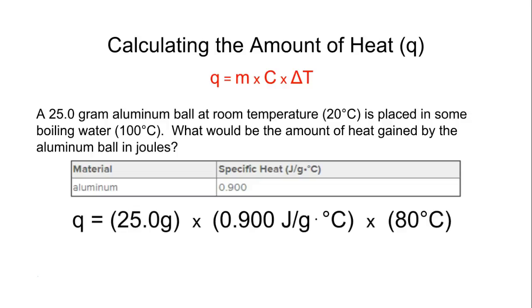Well, if we write this out, we end up having 25.0 grams. There's our specific heat of 0.900. And then of course the temperature change went from 20 degrees Celsius to 100 degrees Celsius. We're assuming that aluminum ball was going to be 100 degrees Celsius at the end. So it must have gained 1,800 joules of heat. So we would say there are 1,800 joules of heat gained in that situation.